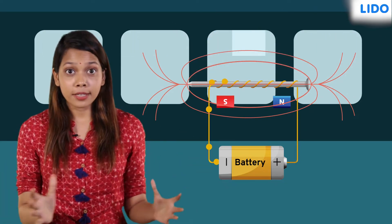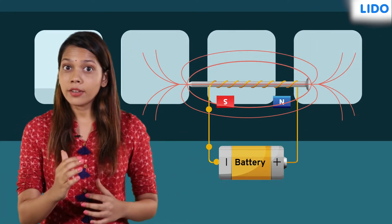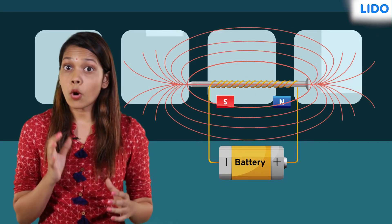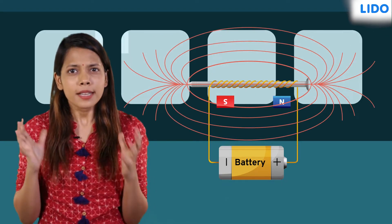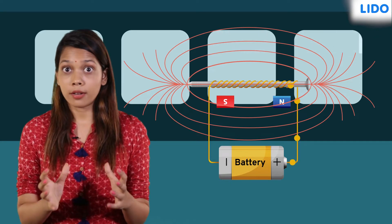The magnetic field of an electromagnet can be increased either by increasing the number of turns of the coil or by passing a strong current through the coil or both.